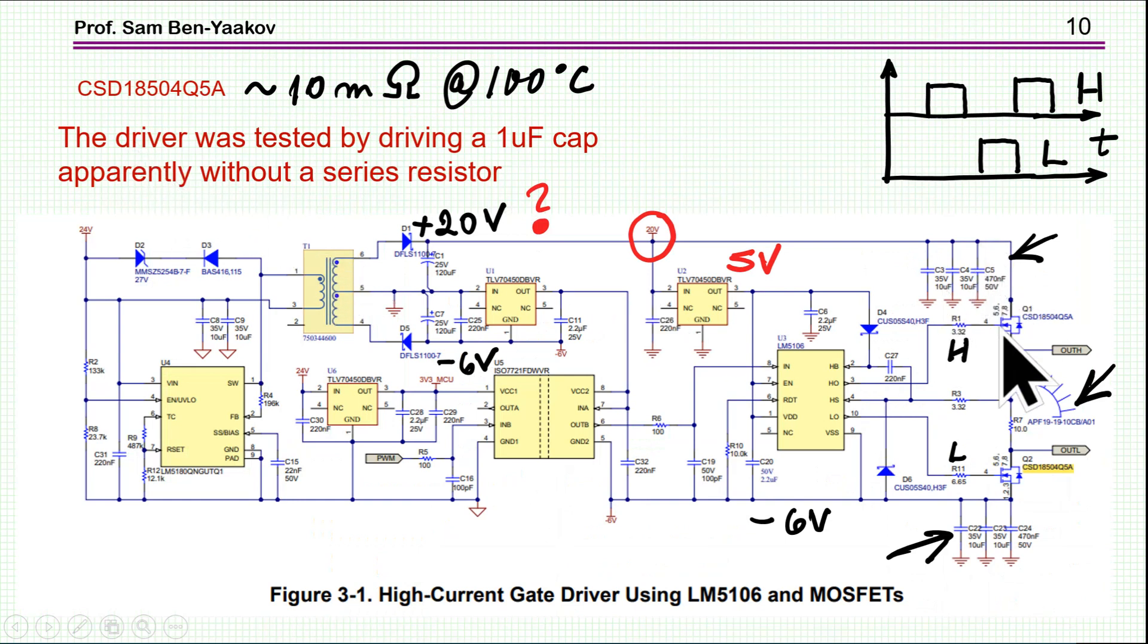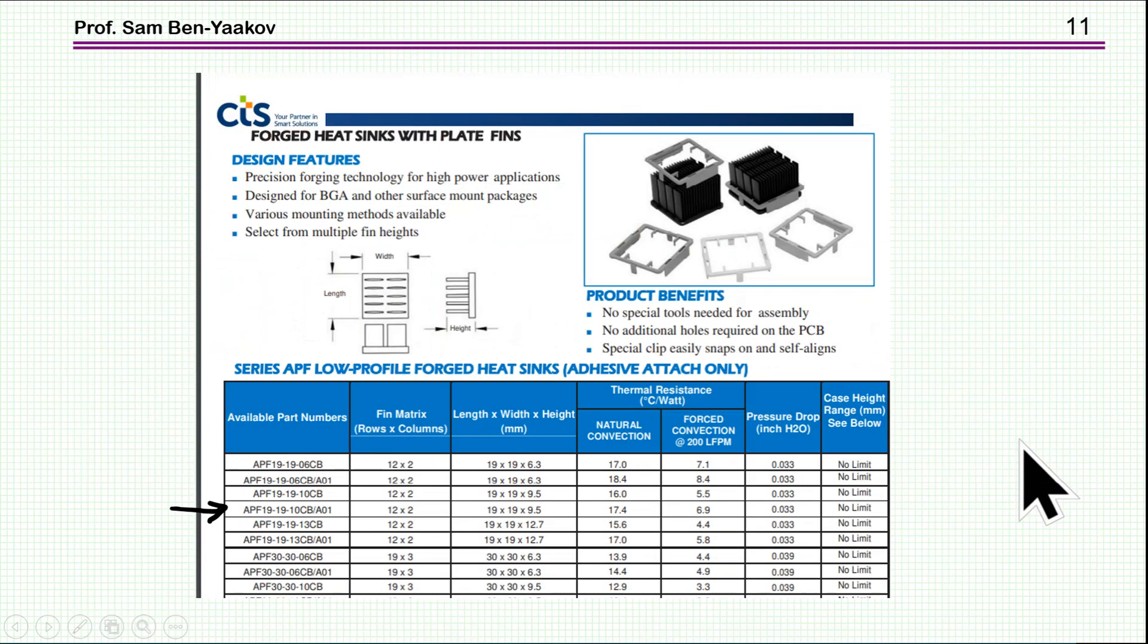Now, these transistors here are 10 milli-ohm. These transistors. And also, there is a heat sink here connected to this transistor. And if I look here at the specification of this heat sink, and this is the part number, I see it's a 2 centimeter times 2 centimeter and the height of 1 centimeter approximately with 17.4 degree per watt. So, this is the heat sink that they are going to put, or they have put. Actually, there is a picture of the board. And this is the heat sink that they have put of these transistors, the two transistors.